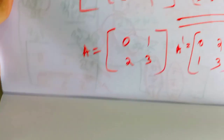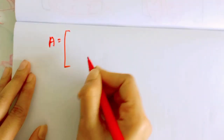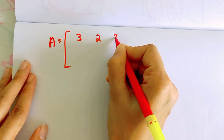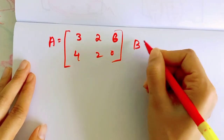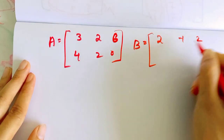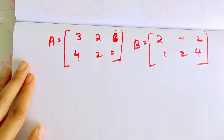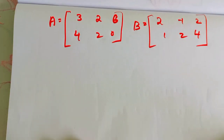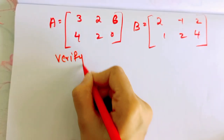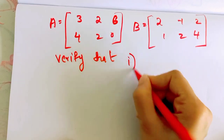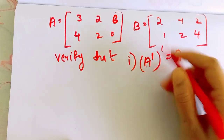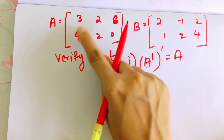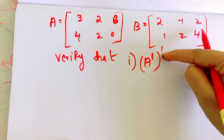Let's see a question. We have a matrix A that is 3, 2, 6, 3, 2, 6, 4, 2, 0, and a matrix B that is 2, minus 1, 2, 1, 2, 4. This is the example. We have to verify the transpose properties.